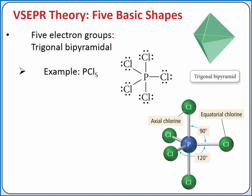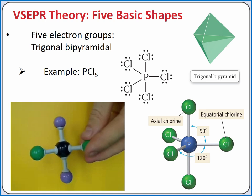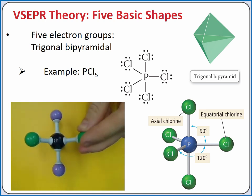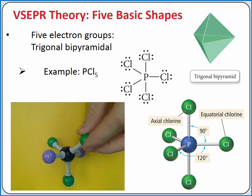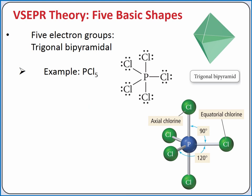If we add a fifth electron group on our central atom, the farthest we can put the five electron groups away from each other is to the corners of a trigonal bipyramid. This geometry is called trigonal bipyramidal. We classify the five electron groups into two categories: axial and equatorial. There are two axial groups, which are 180 degrees apart from one another, much like the linear geometry. There are three equatorial groups, which are 120 degrees apart from one another, going to the corners of a triangle, much like trigonal planar. Any given equatorial group is 90 degrees away from an axial group. Phosphorus pentachloride has a trigonal bipyramidal molecular geometry.